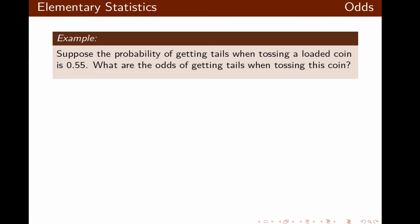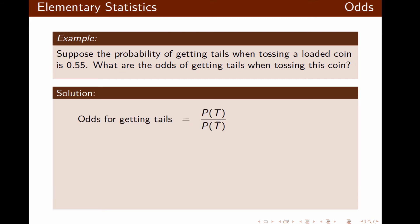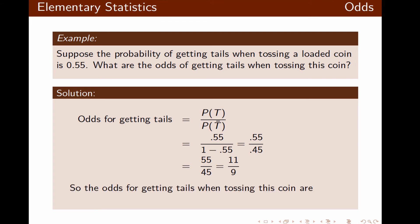Now suppose the probability of getting tails when tossing a loaded coin is 0.55. What are the odds of getting tails? The odds of getting tails equal the probability of getting tails divided by the probability of not getting tails — 0.55 divided by 1 minus 0.55 — which simplifies to 11 to 9. So the odds are 11 colon 9, or 11 over 9.